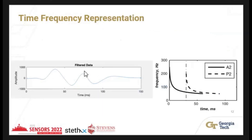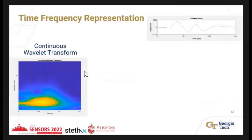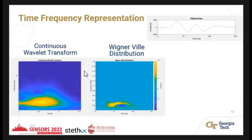To find when the A2 and P2 peaks occur, we looked at instantaneous frequency and instantaneous amplitude, and used time-frequency representations. The most popular method, the Continuous Wavelet Transform, essentially a short-term Fourier transform, has really low resolution — you mainly see only one major blob. We then tried the Born-Jordan distribution, which offers higher resolution but still has significant cross-terms, making it difficult to distinguish A2 and P2 peaks.